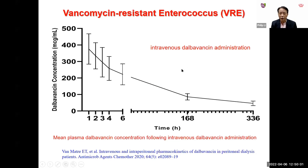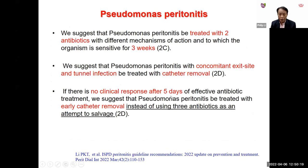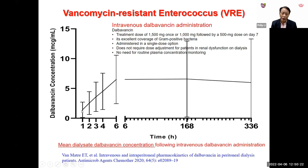For VRE treatment, IV dalbavancin is a potential option. Pharmacokinetic data show that after IV dalbavancin administration, plasma levels gradually decline but dialysate dalbavancin concentrations rise and are maintained for a sustained period. One dose of 1.5 g IV dalbavancin — or 1 g followed by 500 mg on day 7 — provides good coverage for Gram-positive bacteria without requiring dose adjustment for renal dysfunction.